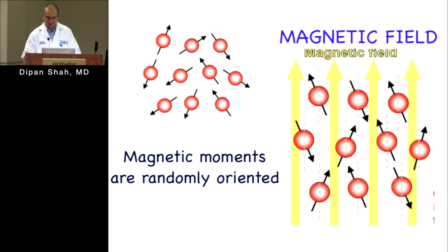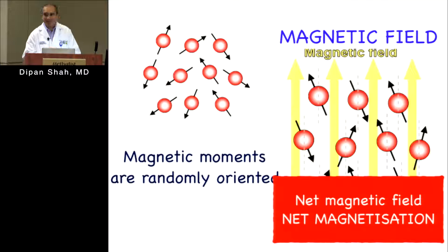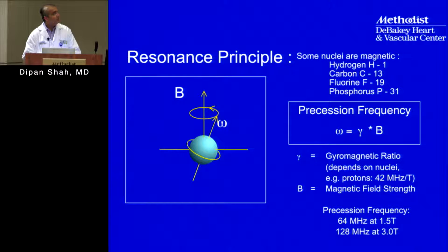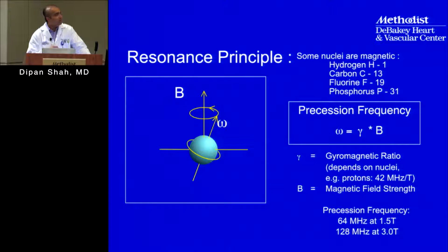Think of the concept of net magnetization. The frequency that these protons spin around at is directly related to the strength of the magnetic field, described by the Larmor equation: precession frequency equals the gyromagnetic ratio times the magnetic field strength. The gyromagnetic ratio depends on each nucleus; for hydrogen it is 42 megahertz per tesla.